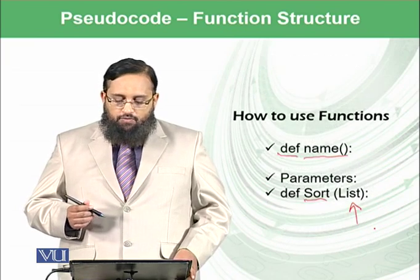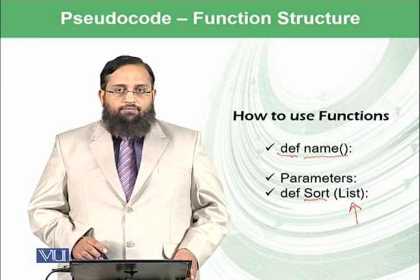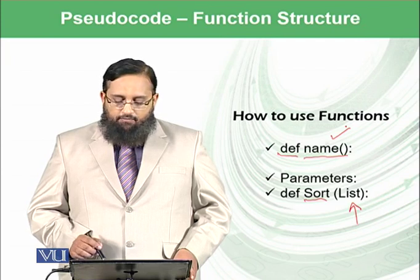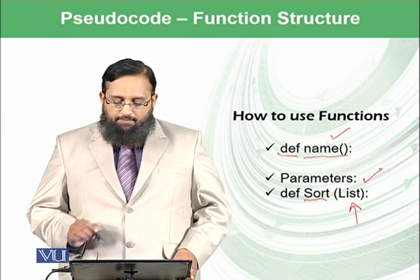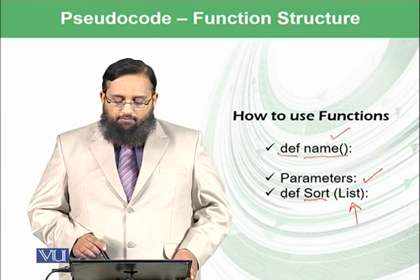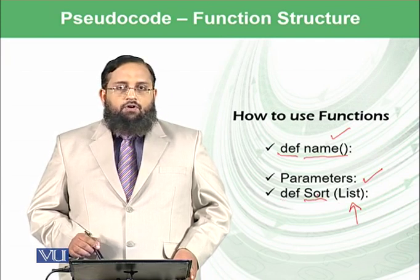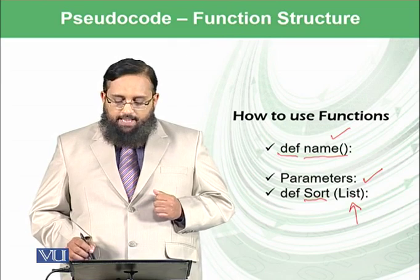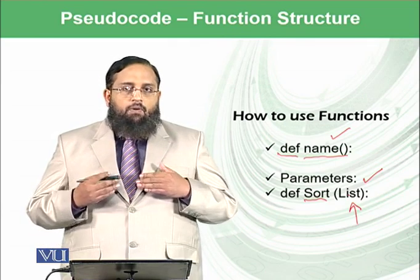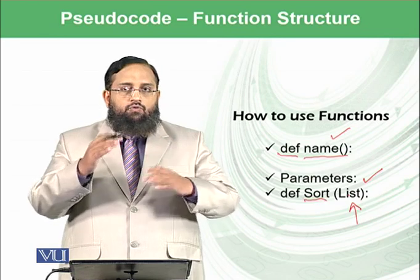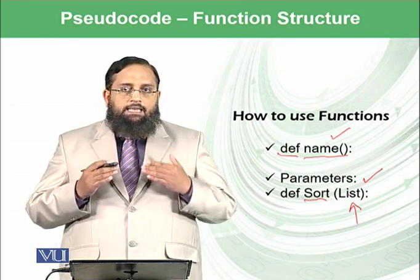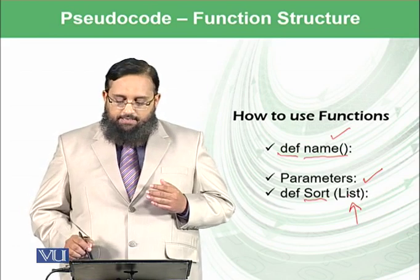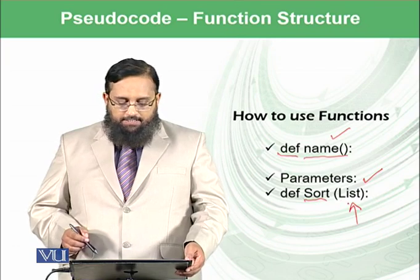So how to use the function? We have def is the definition word and then we write the name of the function. For example, we can also pass the list of parameters. For example, we can define def sort. So def sort is the function which we have defined with the name sort and this sort function has a list. So you need to pass a list to this function to sort it. So whatever we need to give as an input to the function, we can mention that thing in the list of small brackets as a parameter.